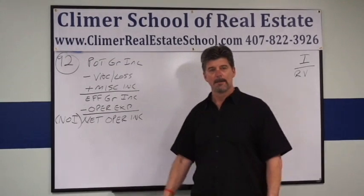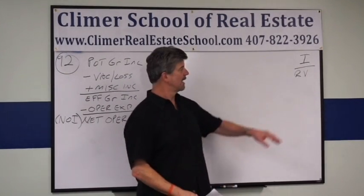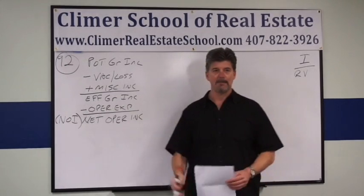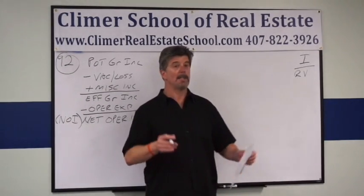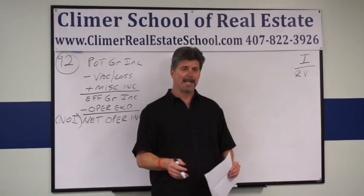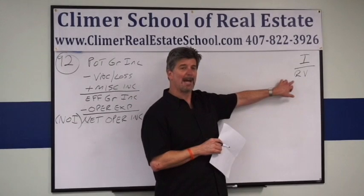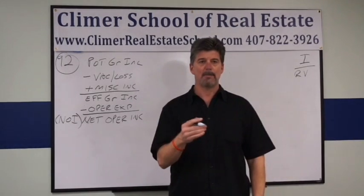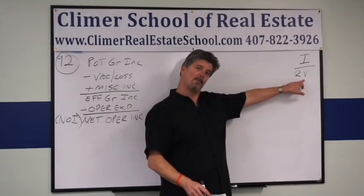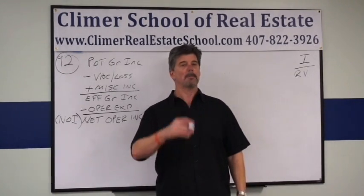That NOI number is the one you want. The other thing you have to know is the income capitalization memory peg: I over RV. I always and only stands for Net Operating Income — none of the other stuff. V is the value of the building — it can be what you paid, what you want to sell it for, or any value in your analysis. R is called the capitalization rate, or cap rate. Think of it as an internal rate of return that an investor uses while balancing the value versus how much income the building is bringing in.